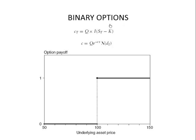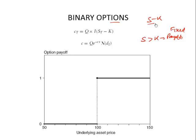The first exotic option we'll study is called a binary option. In a binary option, the payoff is either 0 or 1. In a binary call option, if the stock price ends up above the strike price, there is a fixed payoff. That payoff is not dependent on S minus K — it is a fixed amount. If the spot is greater than the strike, the option is in the money and there will be a fixed payoff.